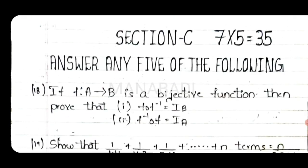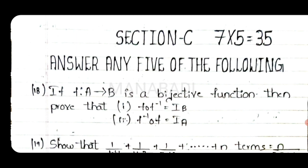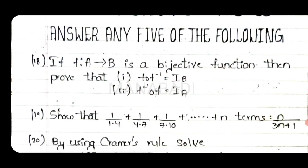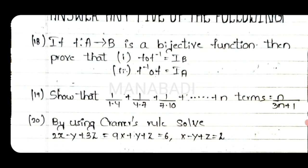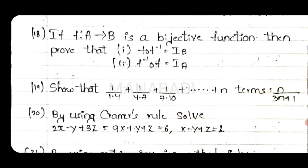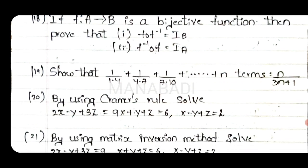Section C — answer any 5 of the following. One question is 5 marks. Eighteenth question: If f from A maps to B is a bijection, then prove that the inverse function exists. Nineteenth question: Show that 1 by 1.4 plus 1 by 4.7 plus 1 by 7.10, up to n terms, equals n by 3n plus 1.